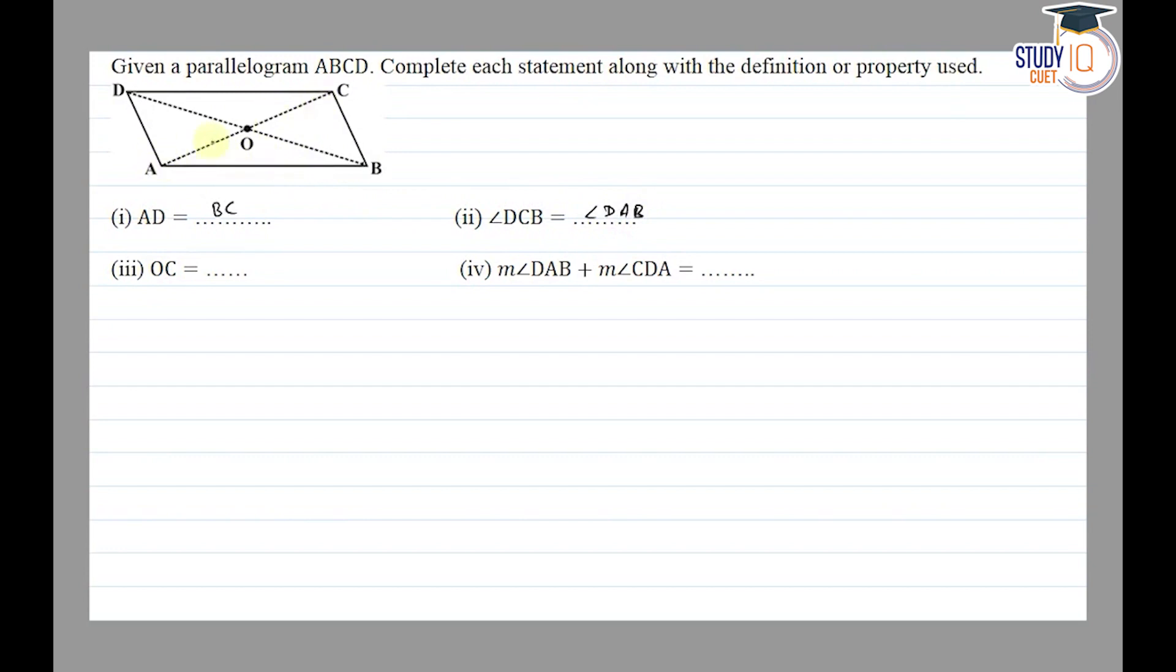Opposite angles of parallelogram are equal. Then OC is equal to OA because diagonals of parallelogram bisect each other, so this equals this.